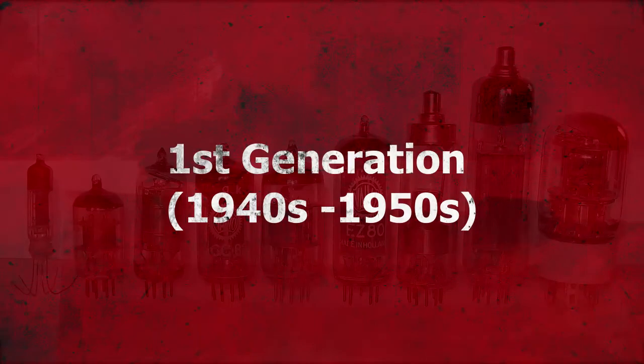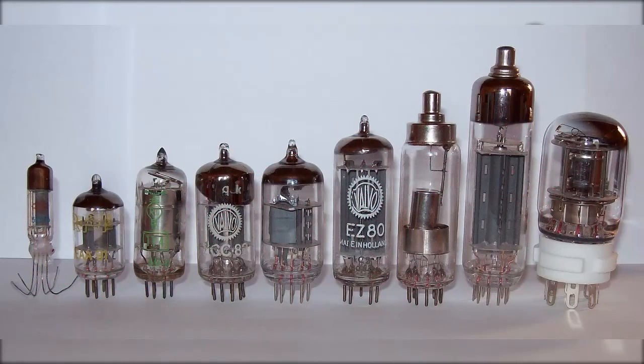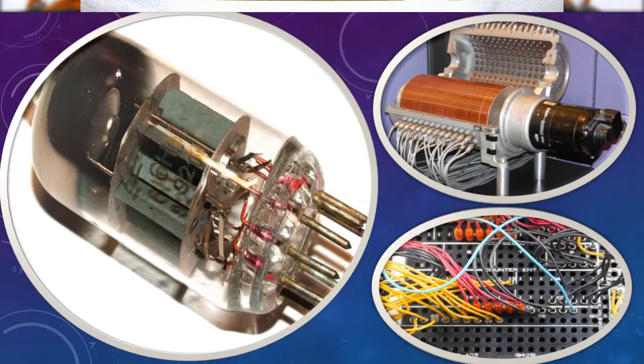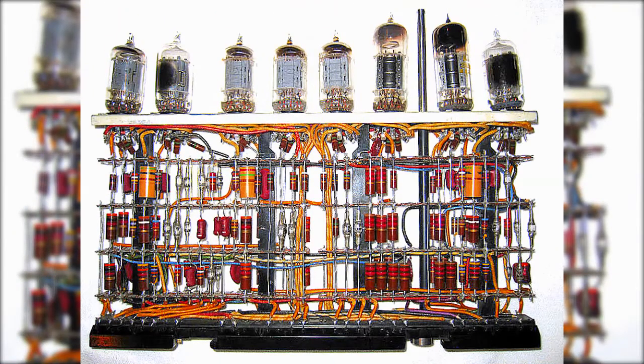First generation of computers, 1940s to 1950s, vacuum tubes and plug boards. First generation computers were the first general purpose and true digital computers. They came to replace electromechanical systems, which were too slow for assigned tasks. A case in point was the need by the USA Army to have machines capable of computing artillery firing tables fast enough.